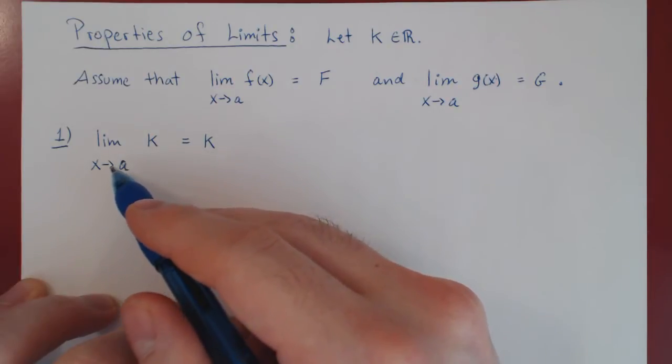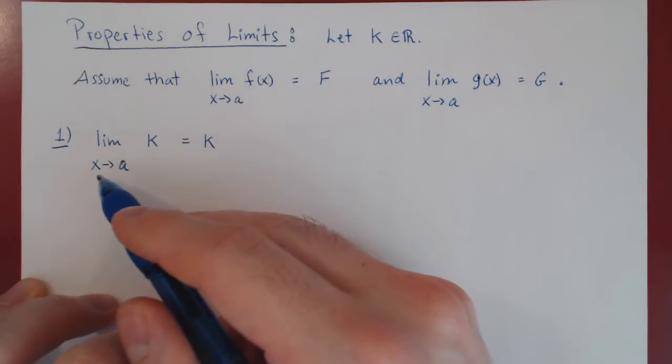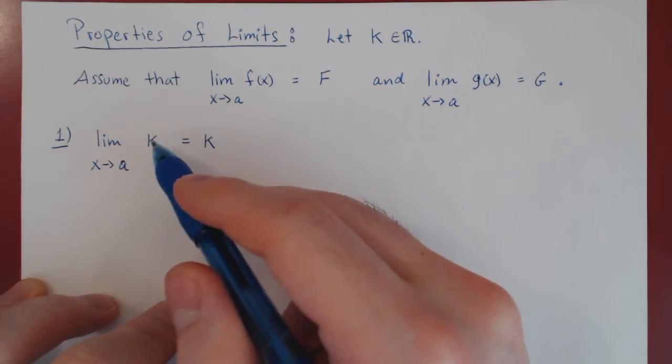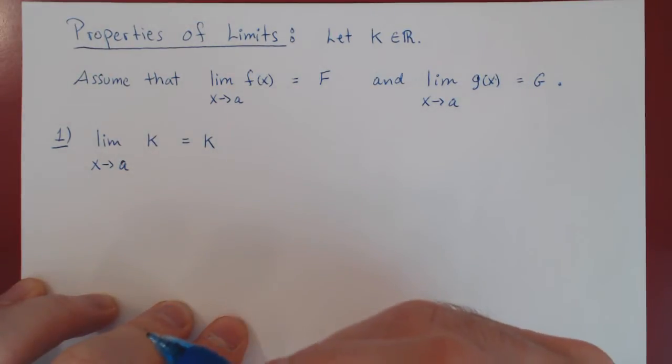No matter what the value of a is, k does not depend on x, and so k is always k. So as x is approaching a, k is approaching itself.